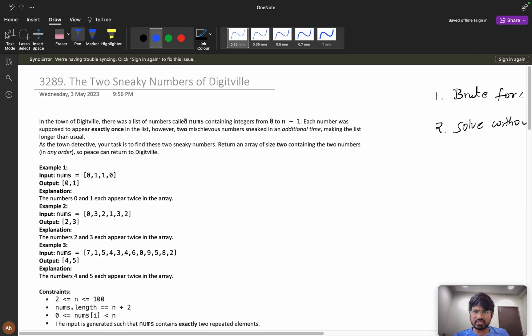Now let's understand the question. In a town of Digitville, there was a list of numbers called nums containing integers from 0 to n minus 1. Each number was supposed to appear exactly once in the list. However, two mischievous numbers sneaked in an additional time, making the list longer than usual.